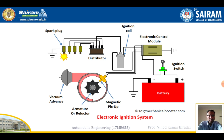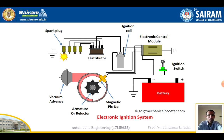Now I will tell you the construction parts. First, it consists of a battery. The battery has two terminals: negative, which is connected to ground (earthing), and positive, which is connected to the ignition switch, which is then connected to the Electronic Control Module (ECM). The main function of the ECM is to give the signal to the ignition coil regarding how much voltage is required.